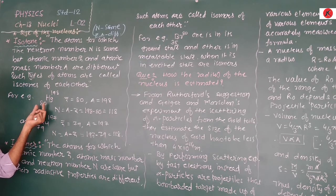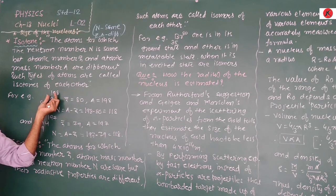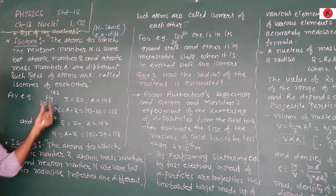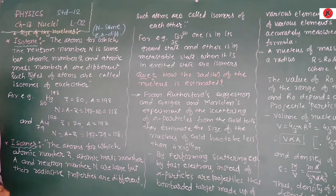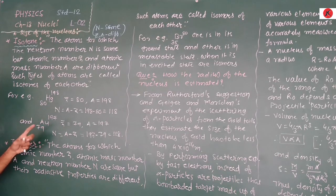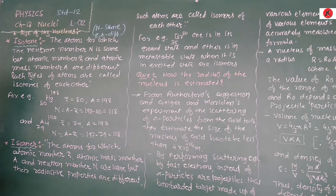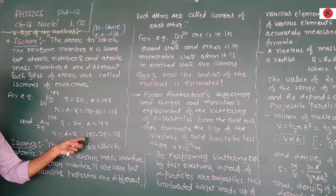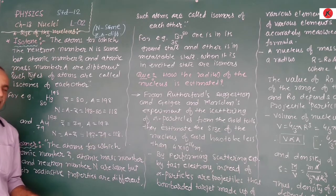For example, mercury (Hg-198): atomic number Z = 80, atomic mass number A = 198, so neutron number N = A − Z = 198 − 80 = 118. The isotone of mercury is gold (Au-197): atomic number Z = 79, atomic mass number A = 197, therefore neutron number N = 197 − 79 = 118.